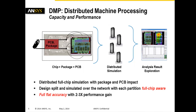This year, we are introducing Distributed Machine Processing, or DMP. DMP enables large design simulation by distributing over multiple smaller machines, thus decreasing the overall memory requirement and improving runtime. This capability enables designers to maintain full, flat accuracy while benefiting from performance gain. With DMP, we can run a distributed full-chip simulation with package and PCB impact by partitioning the design and simulating over the network. Each partition simulation is full-chip aware, thus we maintain full, flat accuracy while making significant performance gains.